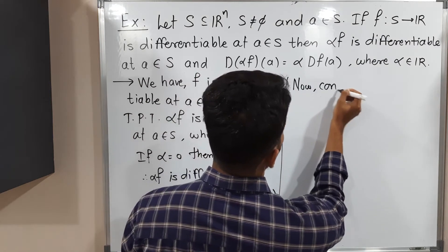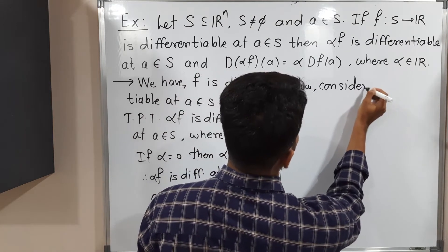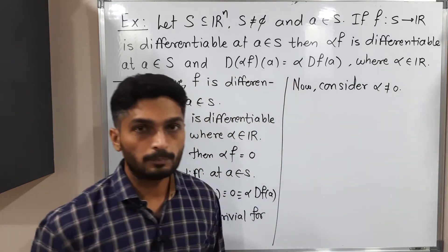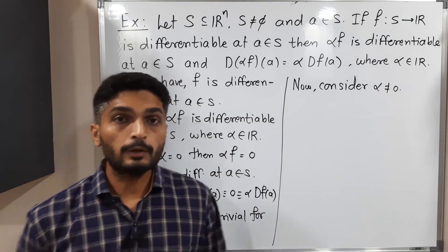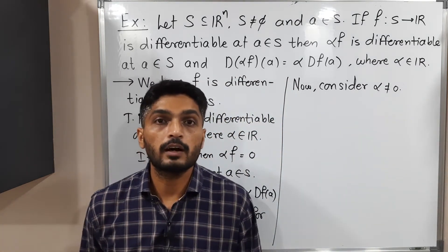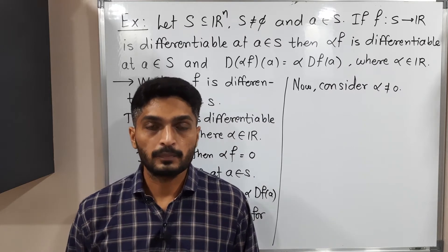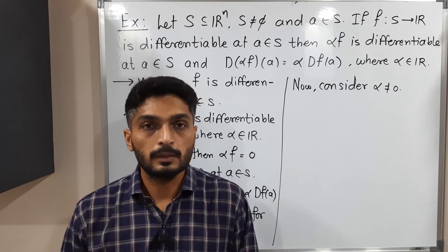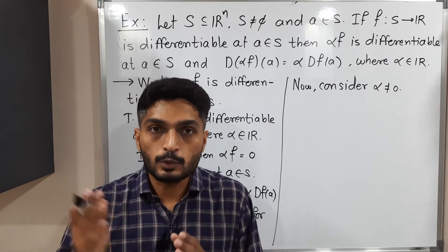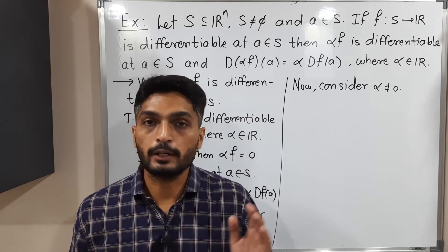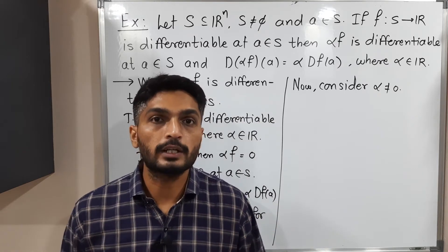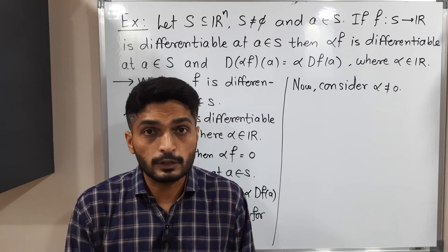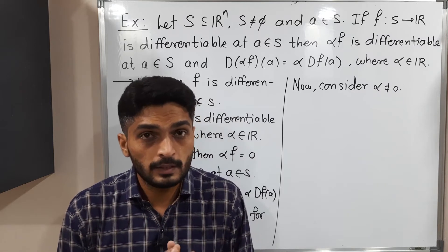Now consider α not equal to zero. We have to prove that αF is differentiable at A. There are two ways to prove this — either we can use the definition of limit, or we can use the epsilon-delta definition. I am going to use the epsilon-delta definition to prove this result.